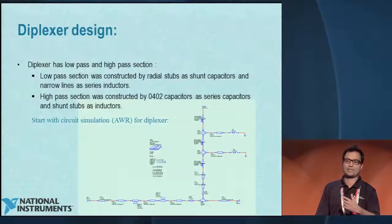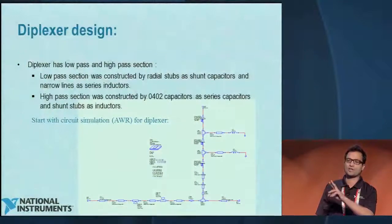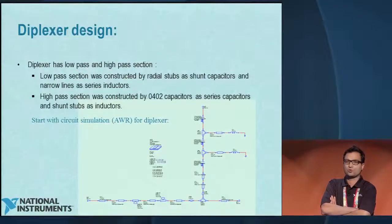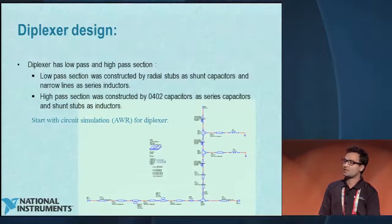To further optimize the design, I need to take it to a 3D simulator to check the interaction between the two arms. The problem is that to simulate in a 3D simulator, I need to know the exact construction of the capacitor — and even if I know that and contact the manufacturer, it's going to take a long time to run the 3D simulation with those capacitors in the design. So I looked for a way to do fast optimization in the 3D simulator.